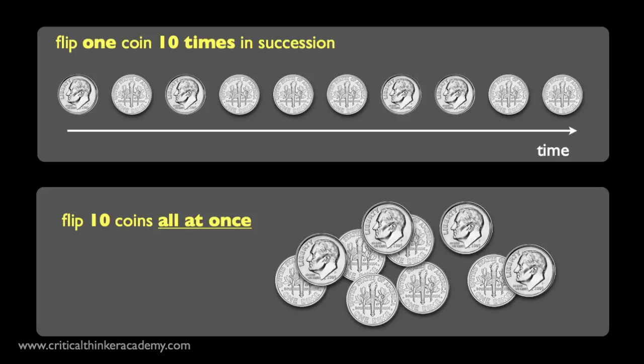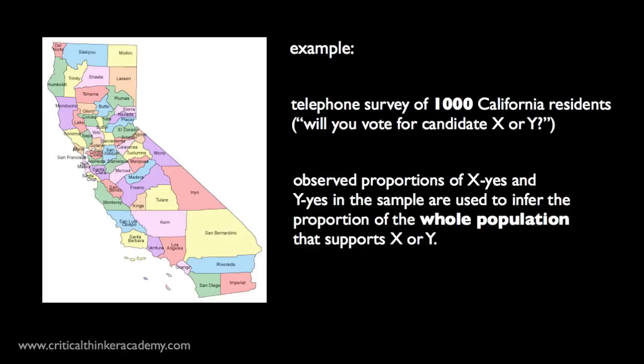Like what pollsters use when they try to figure out the odds that a particular candidate will win an election. You survey a representative sampling of the population, record proportions of yes or no votes, and these become the basis for an inference about the proportions one would expect to see if you surveyed the whole population. All I'm drawing attention to here is the fact that frequency approaches to probability are quite commonly used in standard statistical inference and hypothesis testing.